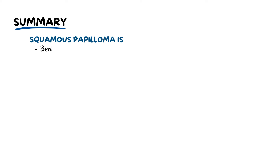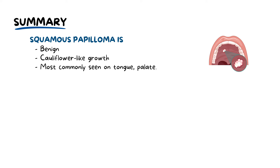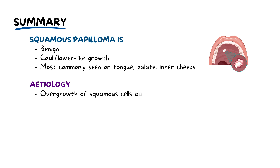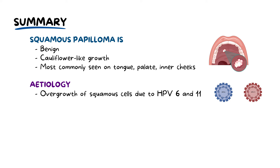To summarise, squamous papilloma refers to a benign, cauliflower-like growth in the oral cavity, primarily resulting from the human papilloma virus, or HPV, especially types 6 and 11. Most commonly, this is seen on the tongue, palate, and inner cheeks and lips. It can affect anyone, but there is a prevalence amongst children and young adults.